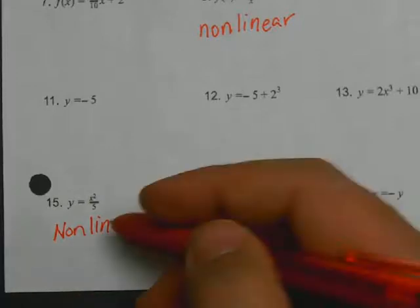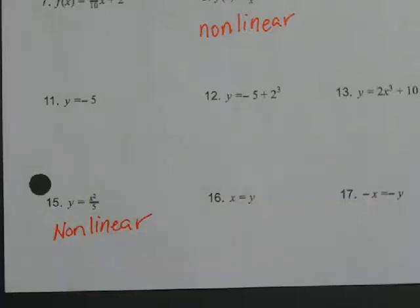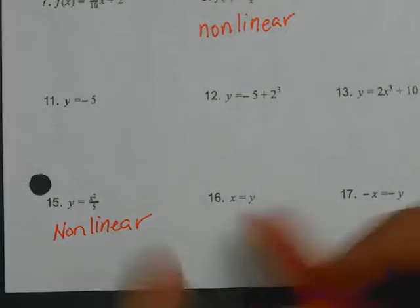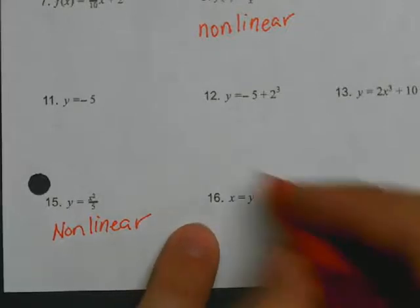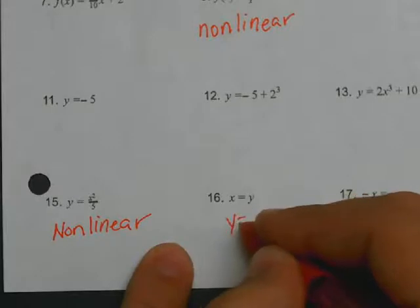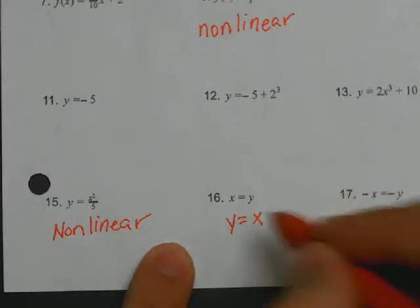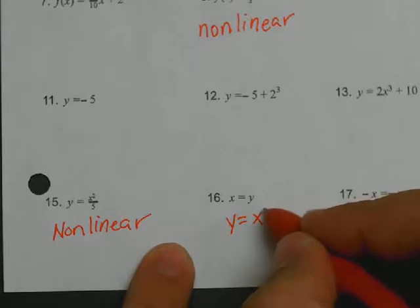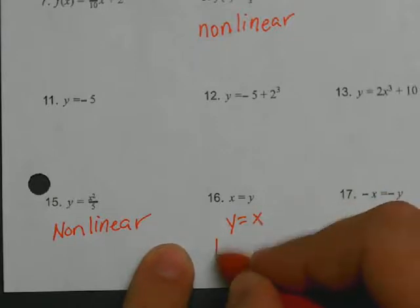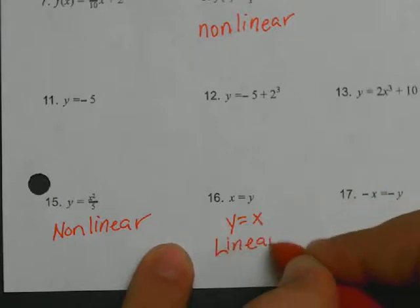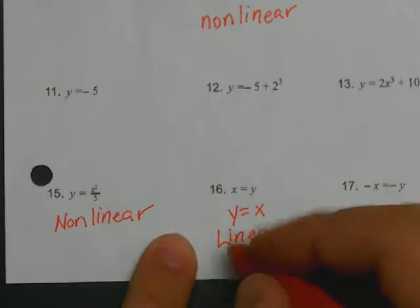Looking at this right here, number 16, x = y. Well, slope intercept form would be y = x, just flipping that around. So is x in the denominator? No. Does it have an exponent greater than one? No. So therefore it is linear. And because it doesn't have a b, it is proportional.